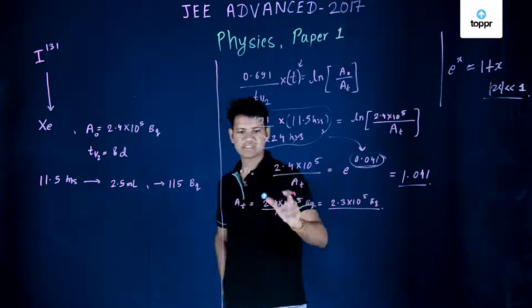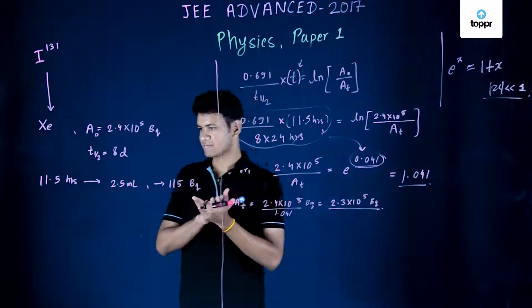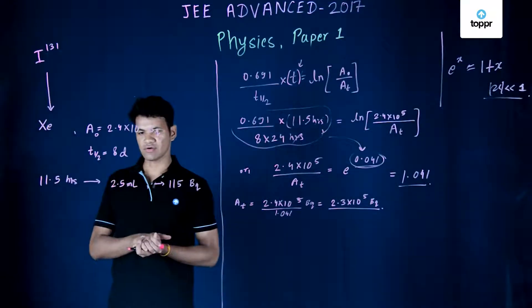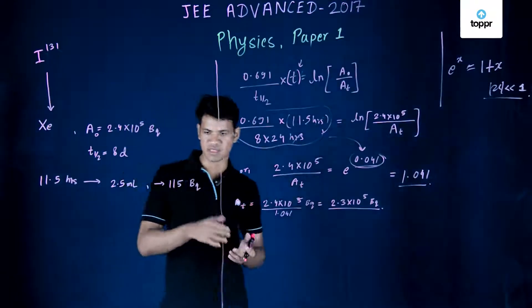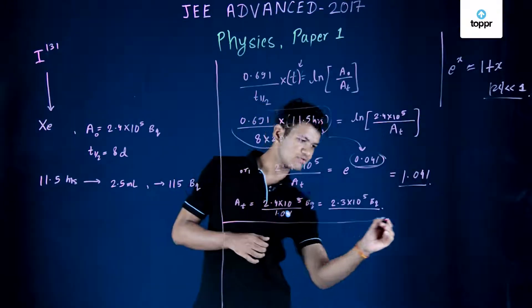Now this activity is for basically the whole human body's blood. But we only take the sample of about 2.5 ml and measure the activity. So we can use the unitary method to calculate the total volume.